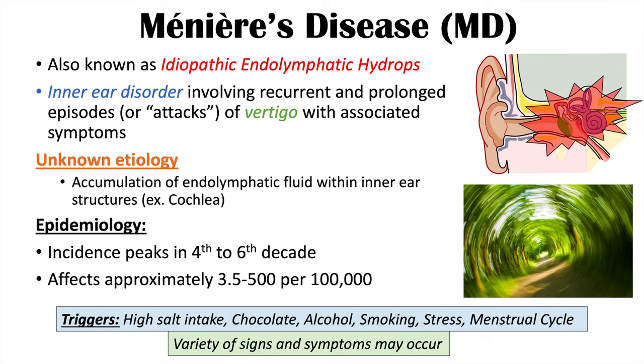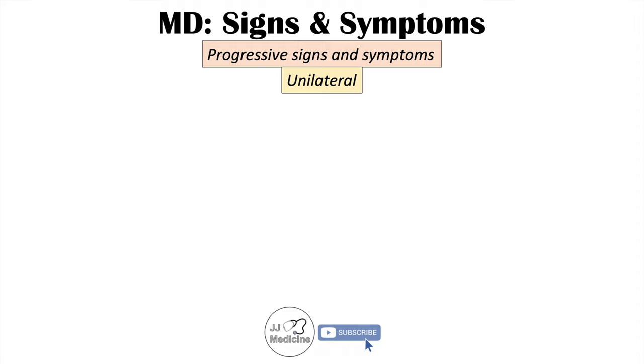The topic of this lesson is the signs and symptoms of Meniere's disease, and there are a variety of signs and symptoms that can occur. It's important to recognize that the signs and symptoms are progressive. As the condition continues, the longer a patient has it, the worse the symptoms become. It's also important to note that many signs and symptoms are unilateral, affecting one ear most often, although in some cases it can be bilateral.